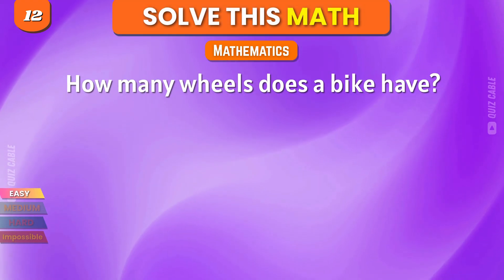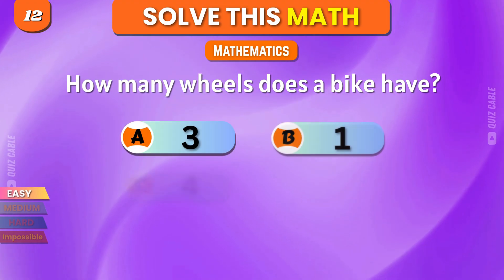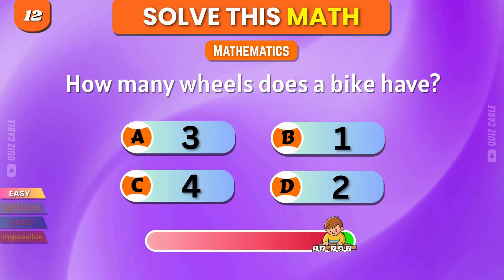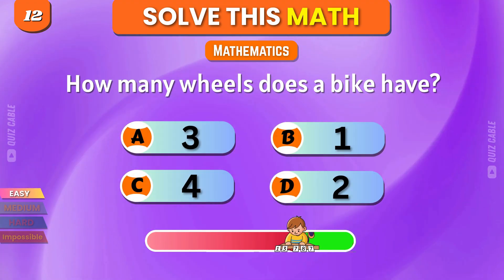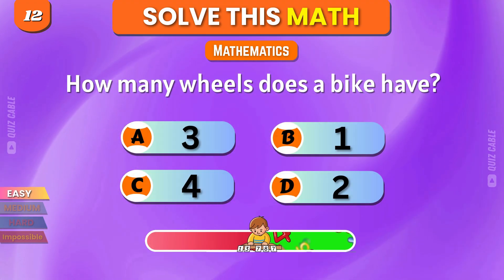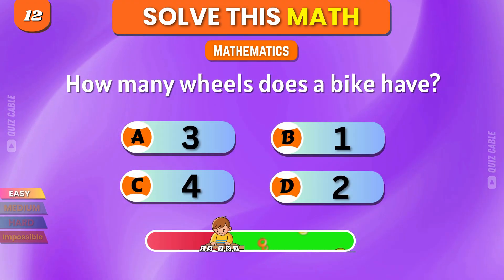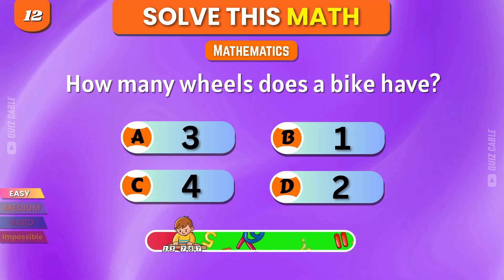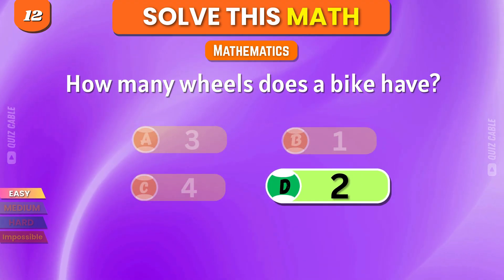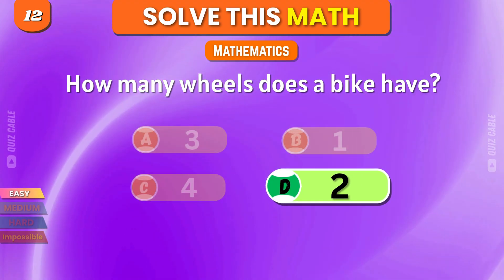How many wheels does a bike have? 3, 1, 4, 2. That's right, 2.